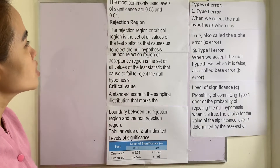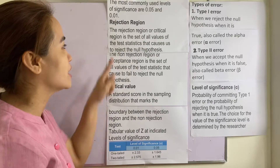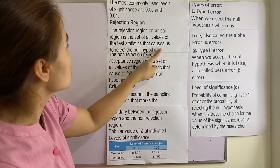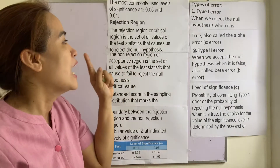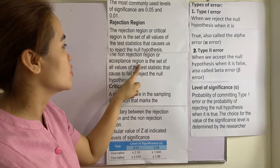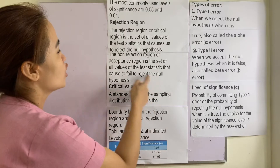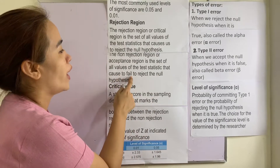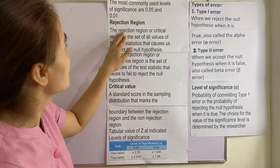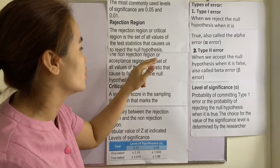The rejection region, or critical region, is the set of all values of the test statistic that causes us to reject the null hypothesis. The non-rejection region, or acceptance region, is the set of all values of the test statistic that causes us to fail to reject the null hypothesis. Take note: this one is the rejection region or critical region, and this one is the non-rejection region.